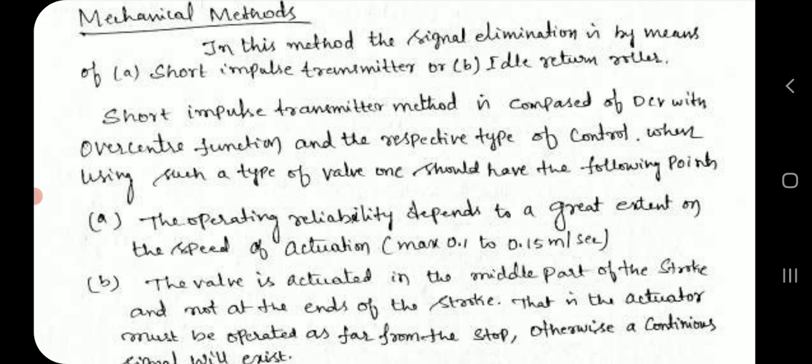Mechanical methods: In this method, the signal elimination is by means of (A) short impulse transmitter or (B) idle return roller. Short impulse transmitter method is composed of direction control valve with overforce center function and the respective type of control valve.